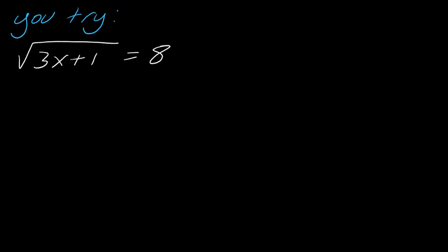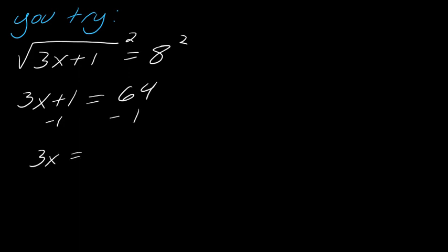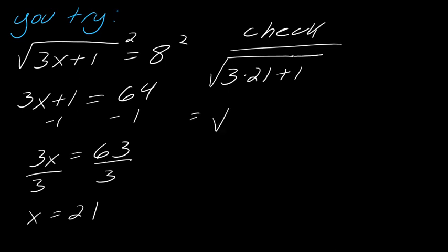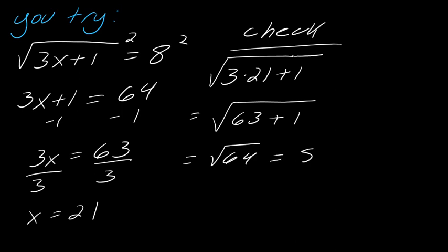Now I want you to give this technique a try. Pause the video and hit play when you're ready. First things first, you're going to square both sides. So I get 3x plus 1 on this side, and 8 squared is 64. Solving as usual, I subtract 1 from each side to get 3x equals 63, then divide by 3 to get x equals 21. Quick check: the square root of 3 times 21 plus 1 is the square root of 64, which is 8. So this one's okay.